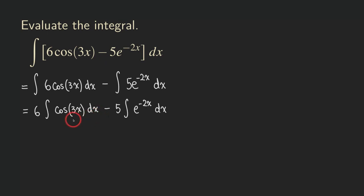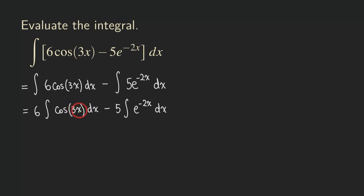Now we have a simple function as the integrand: cosine three X. And for the second integral, we also have a simple function, which is E to the negative two X, an exponential function. So now what we need to do is integrate cosine three X. There's something we need to worry about here, which is to reverse the chain rule. The chain rule tells us that when we differentiate a trig function with a linear expression inside, we need to multiply by the coefficient of X. To reverse the chain rule, we multiply by the reciprocal of that number in front of X.